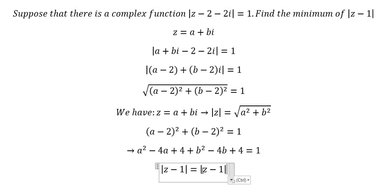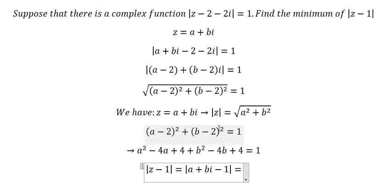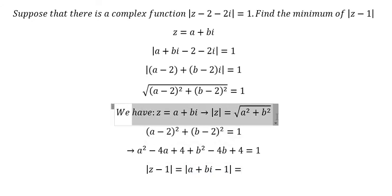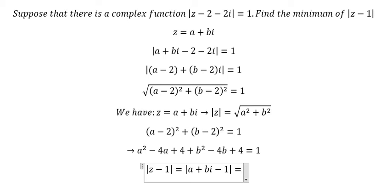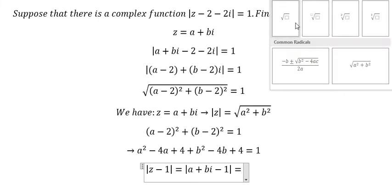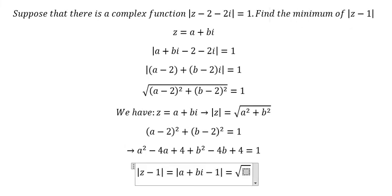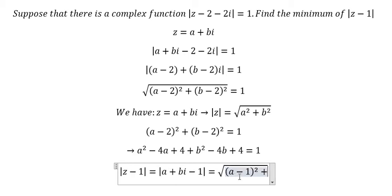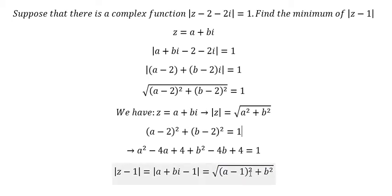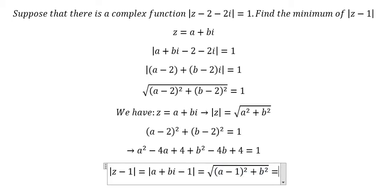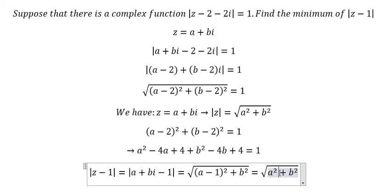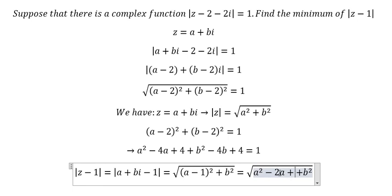Now they want to find the minimum of the absolute value of z minus 1. We change z into a plus bi and apply the same formula, getting the square root of (a minus 1) squared plus b squared. Expanding gives a squared minus 2a plus 1 plus b squared.